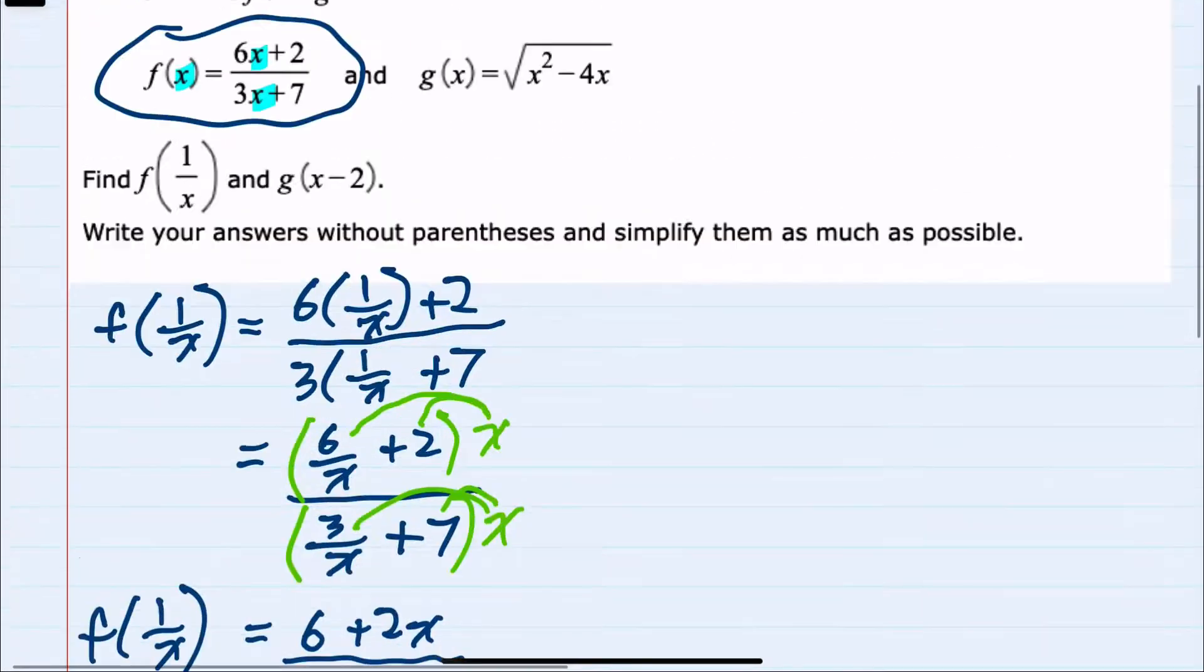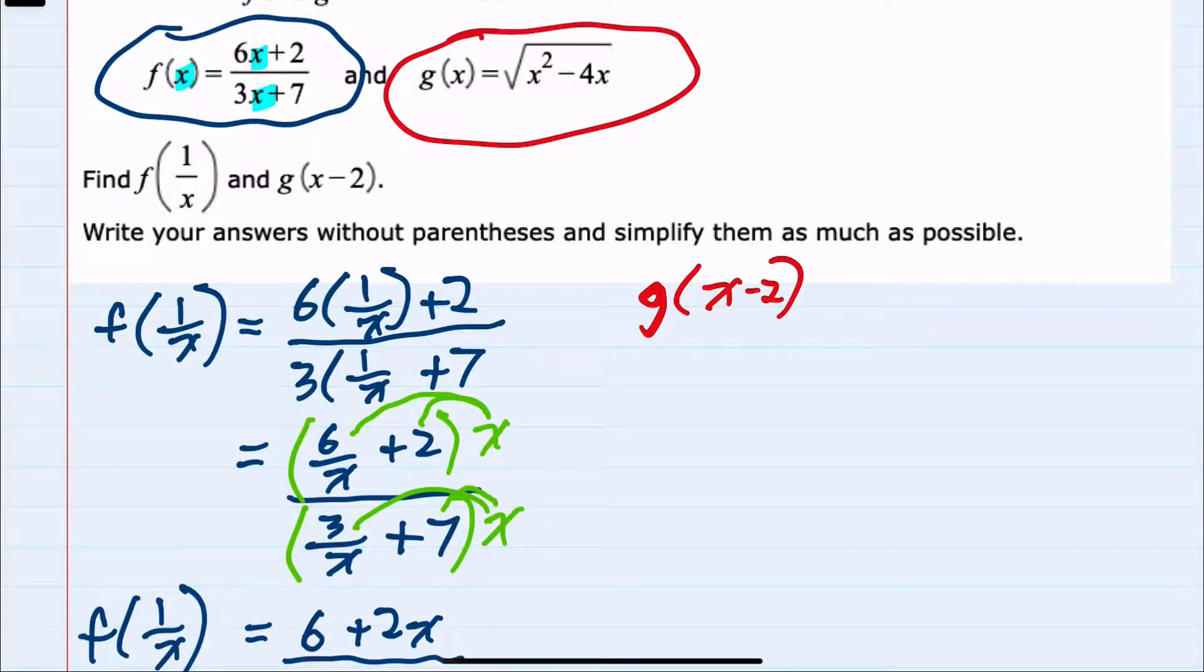Moving now to the second part of the problem, g of x minus 2. We'll be using the g of x function, replacing the x's with x minus 2. And so, underneath the radical, instead of x squared, we would have x minus 2 squared. Instead of minus 4 times x, we would have minus 4 times x minus 2.